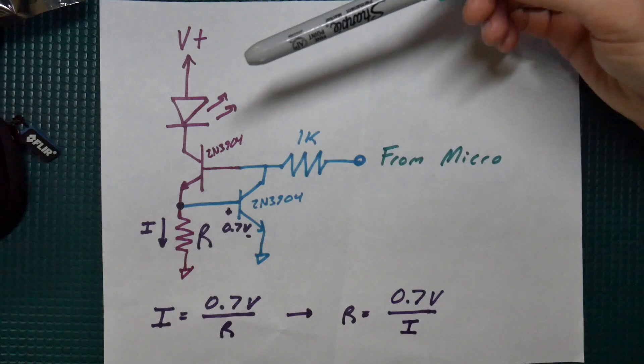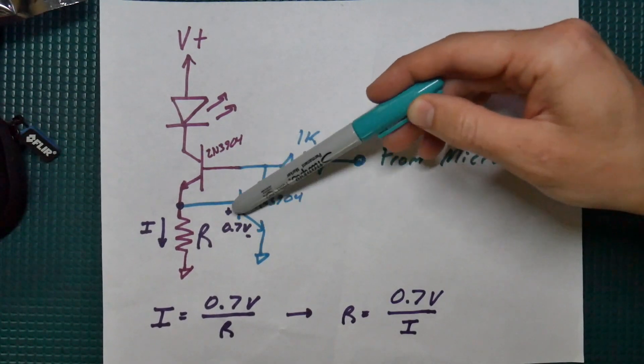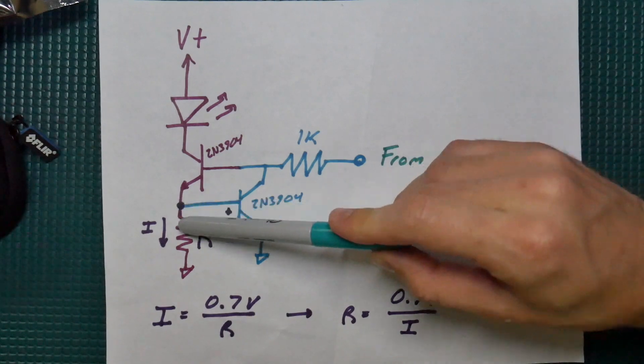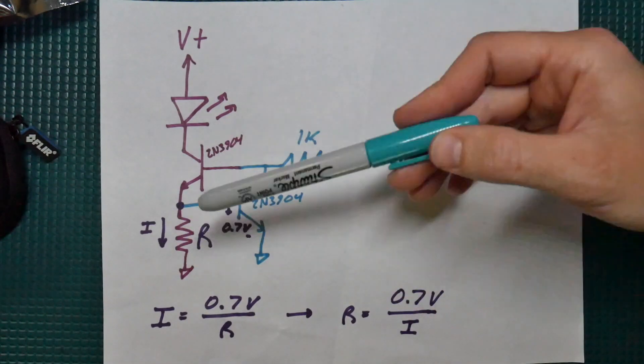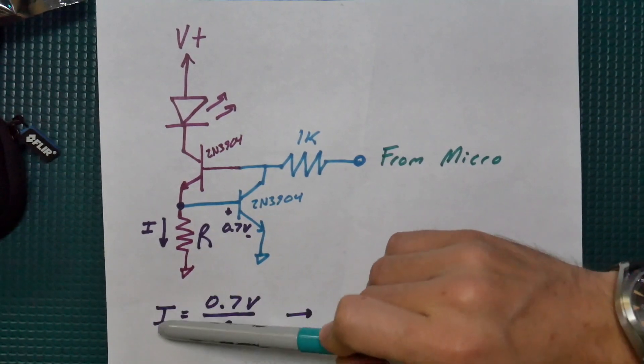And it was very easy to set the constant current because we had the VBE junction voltage here of the blue transistor which is the same voltage across R. So with some simple Ohm's law, 0.7 over R gives us our constant current.